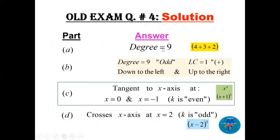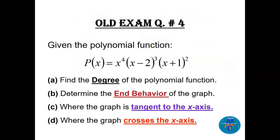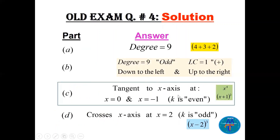The degree is 9, odd, with leading coefficient plus 1 — so this is like the cubic: down to the left, up to the right. Where k is even the graph is tangent: at x = 0 (multiplicity 4, even) and at x = −1 (multiplicity 2, even). At x = 2 the multiplicity is 3 (odd), so the graph crosses the x-axis there.